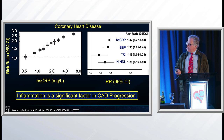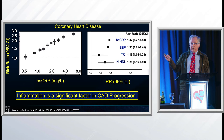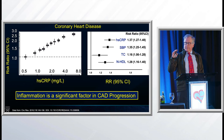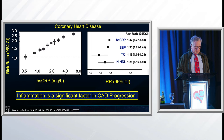One of those things centers around inflammation. If you look at CRP and the risk ratio of having coronary disease, as CRP goes up, the risk of coronary disease goes up. Comparing the risk of CAD from CRP — an index for inflammation — to systolic blood pressure, total cholesterol, and non-HDL cholesterol, you can see that inflammation is probably just as bad, if not worse, as a driver of CAD progression.